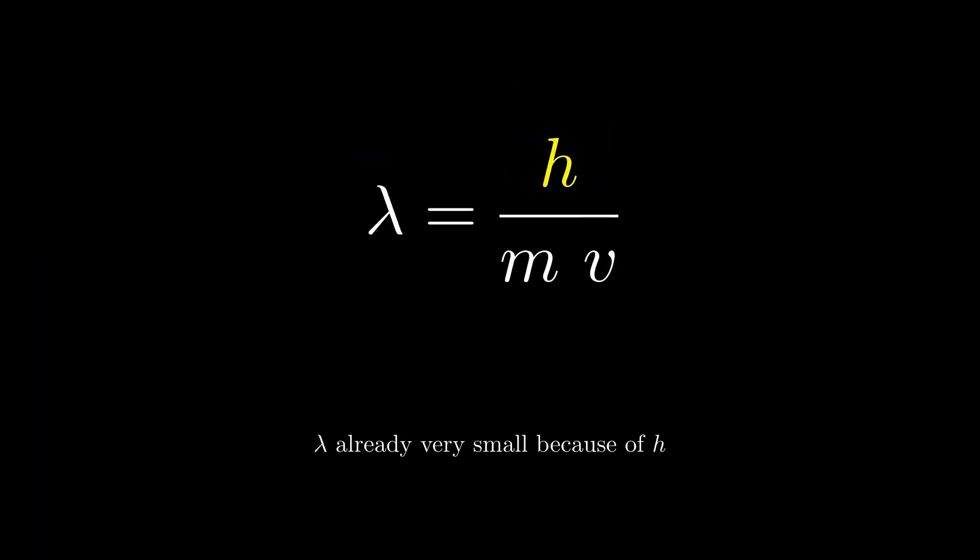If we now put the mass and Planck's constant back into the equation, then the wavelength becomes in general very small. Actually this extremely tiny value of Planck's constant is the main reason why quantum mechanics wasn't realized before. Imagine now we make the mass of the denominator large. The wavelength and all of the wavy properties get entirely negligible.